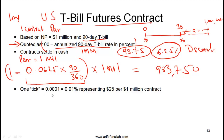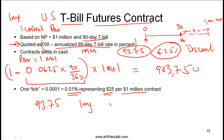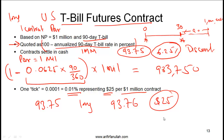One tick, or one minimum price change, in a T-bill futures contract is 0.0001, which is 0.01% or one basis point, and one basis point represents $25 per $1 million contract. For example, if you go long when the price is quoted at 93.75 and the next day the price goes to 93.76, $25 will be added to your account per contract. If the price goes up by two basis points, the amount added is $25 × 2 = $50.